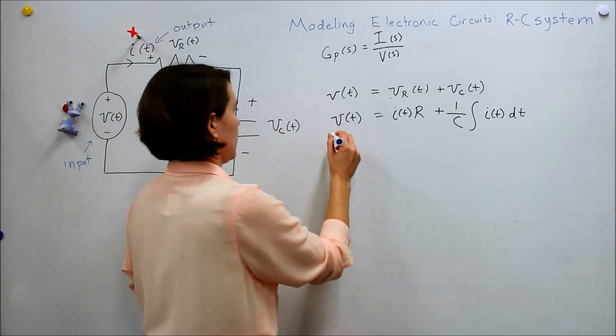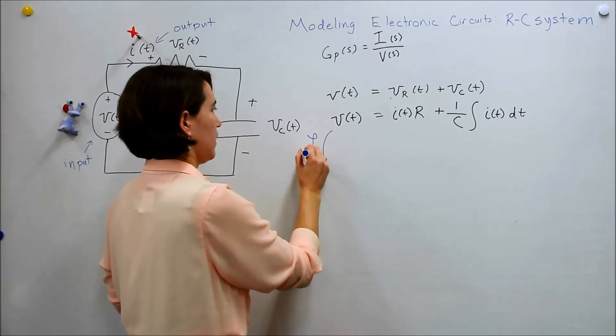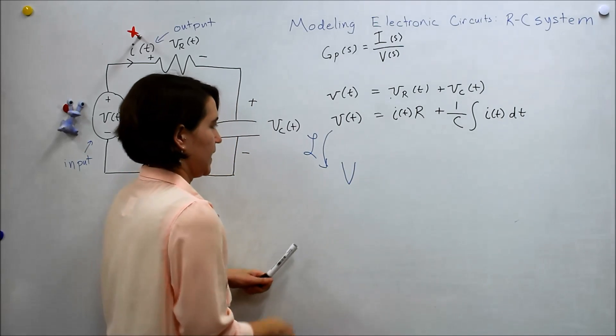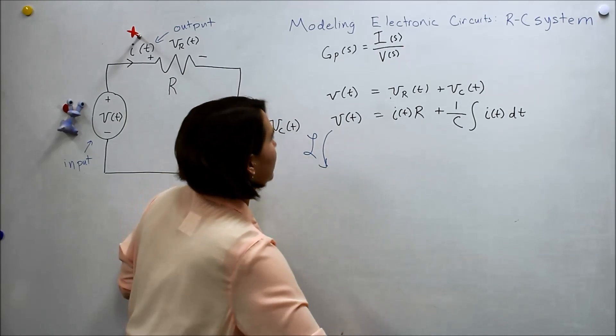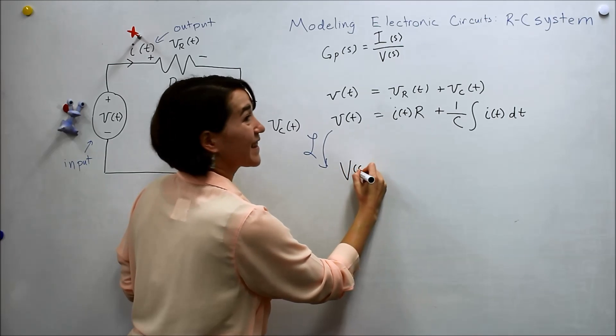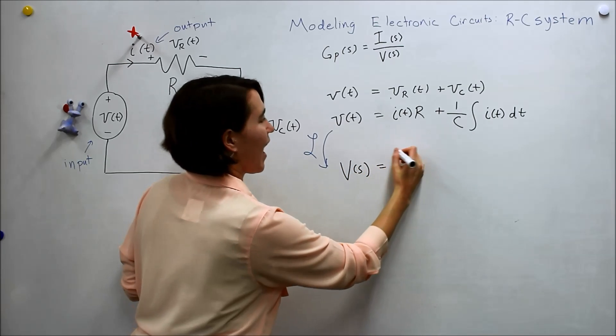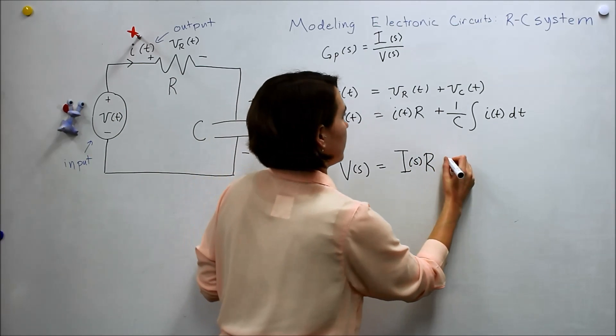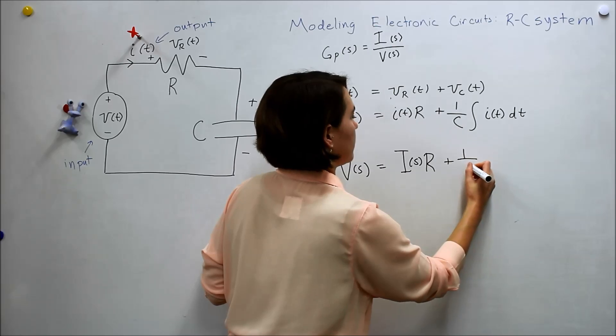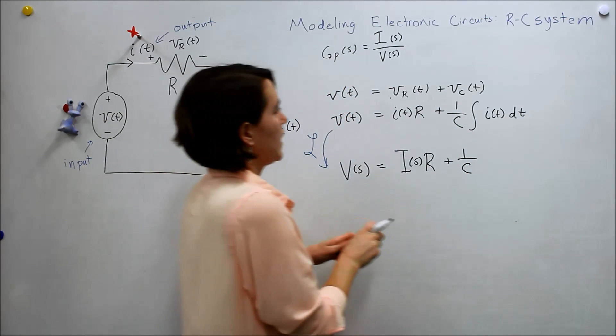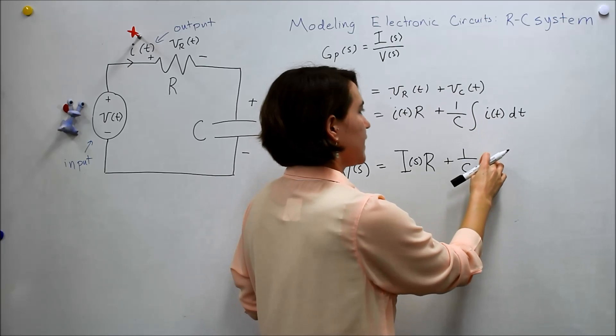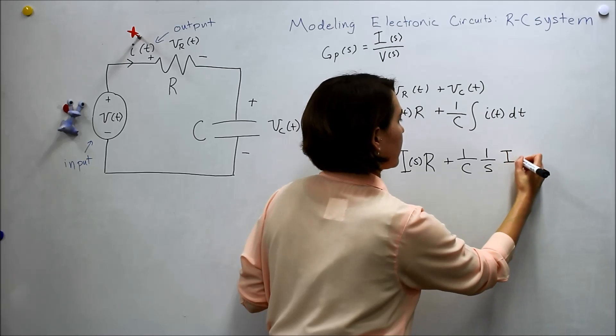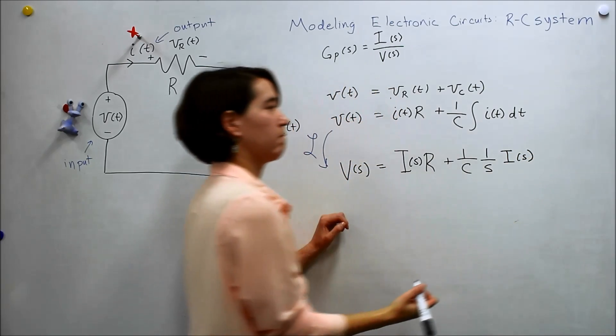Laplace. And we have, oh. We'll be consistent with colors. V of s here. And then i of s times the resistance, plus 1 over c. Okay. And then we take the Laplace here. So we'll get 1 over s, i of s here. Okay.